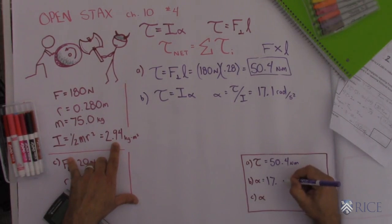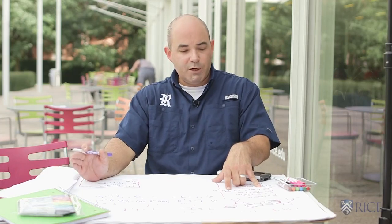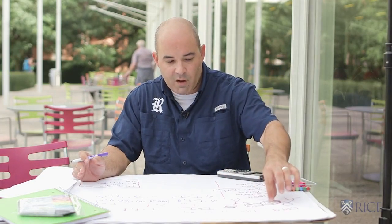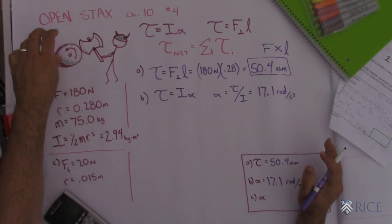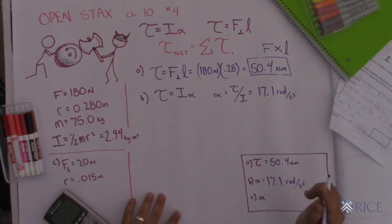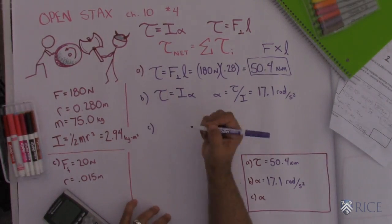All right, so we got the second part of the problem. Now in the third part of the problem, they have us calculate a small frictional torque. If there was a little bit of friction on that wheel applied 1.5 centimeters from the center, it would actually give it a slightly smaller angular acceleration. So to do that one, I'm going to use another formula.